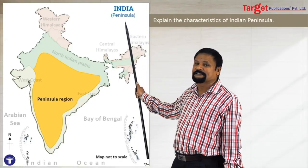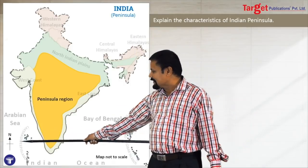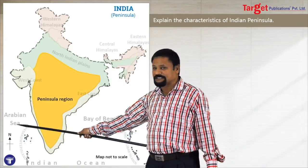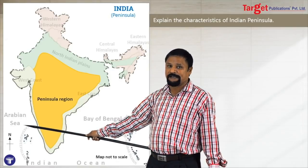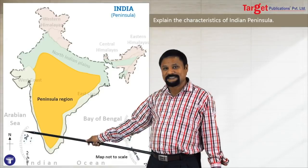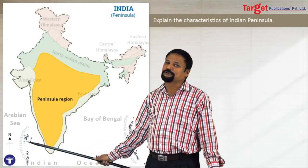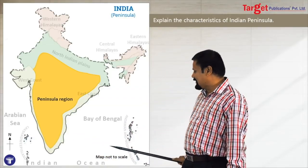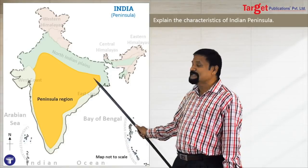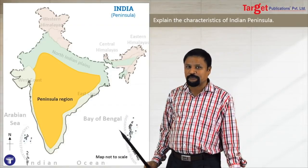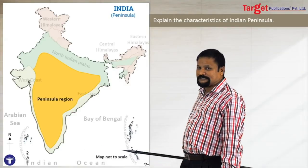Every stencil map should have this. The second thing is you have to show the directions — with an upward arrow and the letter capital N to show north. This is the second thing you should not forget; it should be in every map. The third one is 'map not to scale', because a stencil map cannot be very accurate.